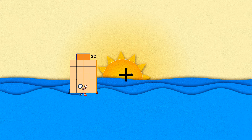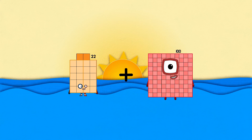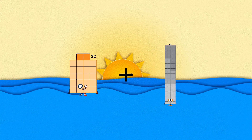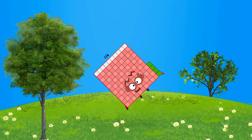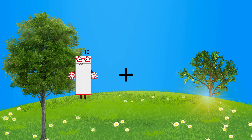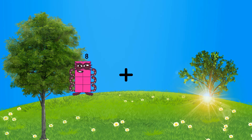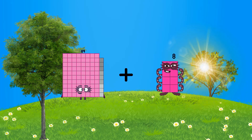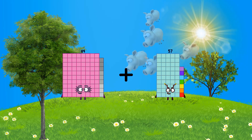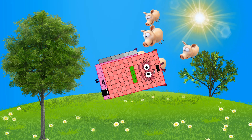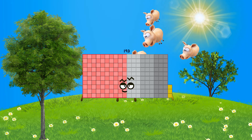22 plus 22 equals 181. Plus... plus 104 equals 193.